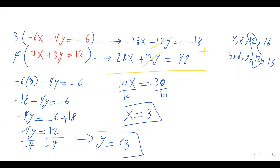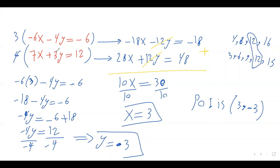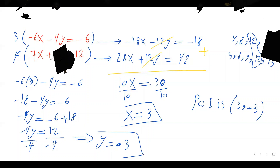So the point of intersection is 3 comma negative 3. That's how we solve linear systems using the elimination method. I just want to mention you can use the substitution method as well, but because the coefficient of none of these variables is 1, you'd end up with lots of fractions, which is not easy. So it's better to use the elimination method when the coefficients are not 1. Thank you for watching.